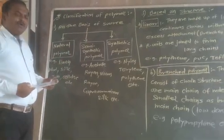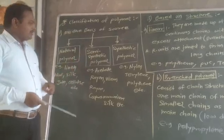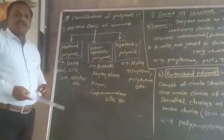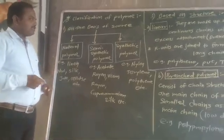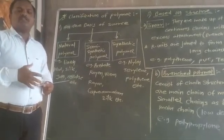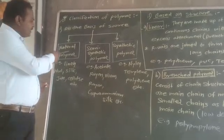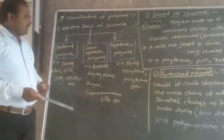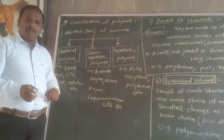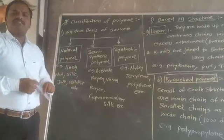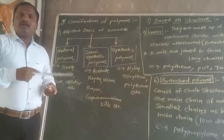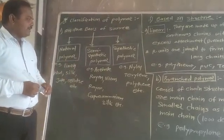The next point is the semi-synthetic polymer. Semi-synthetic polymers are formed by applying some chemical reactions on natural polymers to change their properties, such as tensile strength, appearance, and lustre. By applying chemical reactions to natural polymers to enhance these properties, the resulting polymers are considered semi-synthetic polymers.